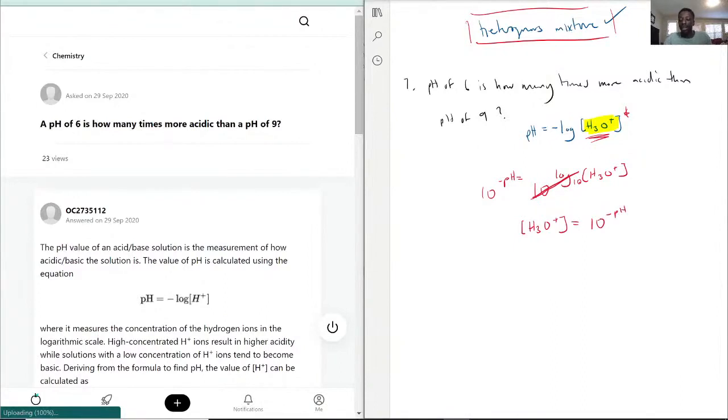Now that we do that, we're going to see how much more one pH is than the other. Once we find out the pH of 6, what it translates to for H3O, we find that out for pH of 9, and then we divide 6 over 9 to see how many times more it actually overcomes it.